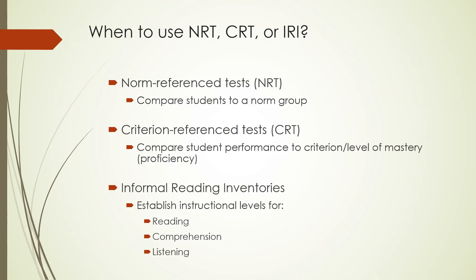So when do you use a norm reference test, a criterion reference test, or an informal reading inventory? Use norm reference tests when you want to compare students to a norm group — how is this student doing in relation to others of the same age or grade? Criterion reference tests compare student performance to a criterion or level of mastery proficiency; the Minnesota MCAs or Wisconsin reading tests are good examples. Informal reading inventories establish instructional levels for reading, comprehension, and listening, and are most useful for planning instruction for a student or groups of students.